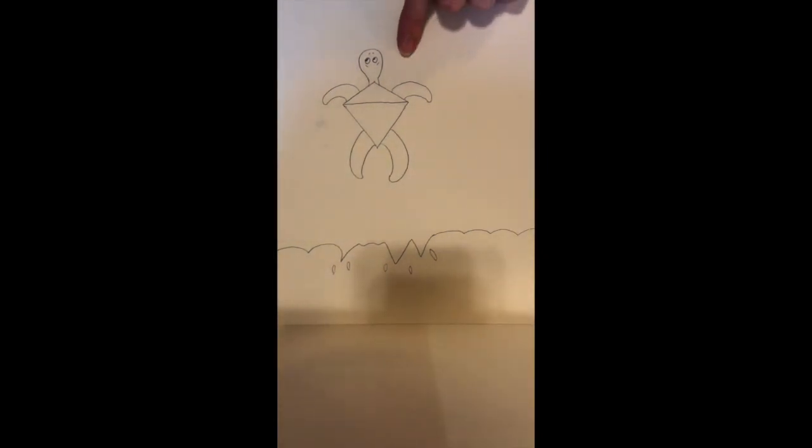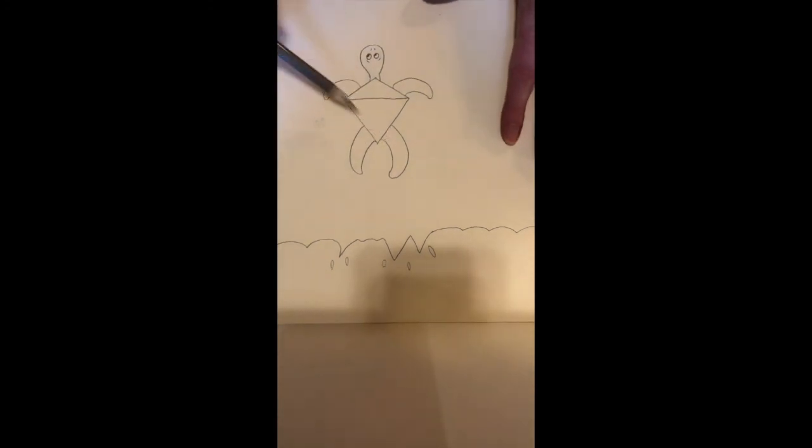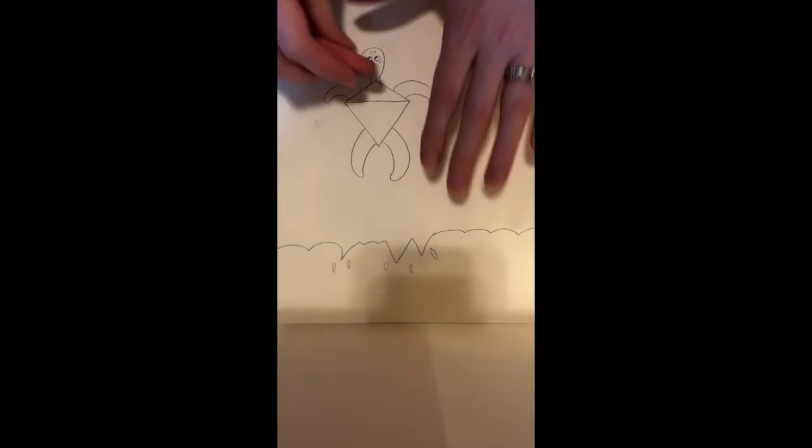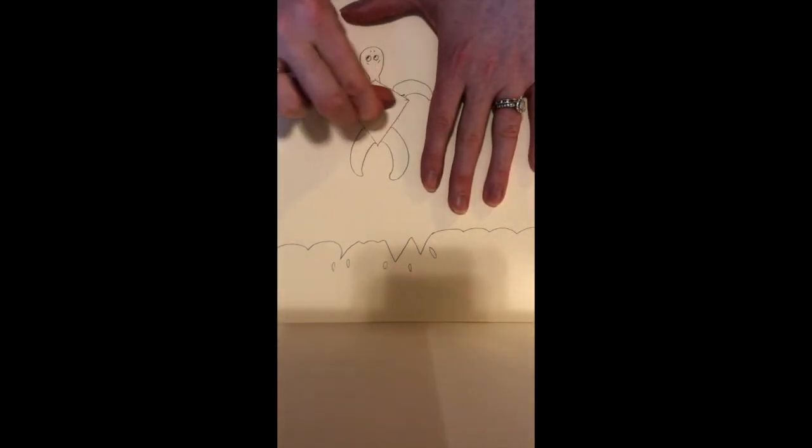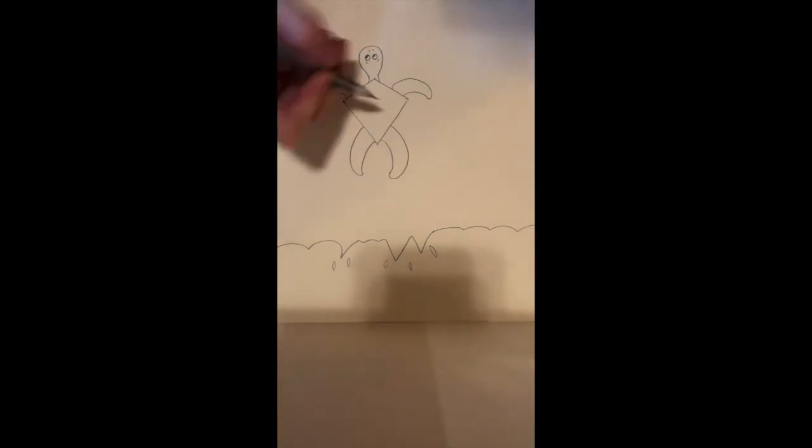Now let's use our eraser for a second because there's the fins and this is his shell. Now turtle shells don't have a line right in the middle. So I want you to erase that line so it just looks like a shell. I'm going to show you how to draw the pattern on his shell or her shell.